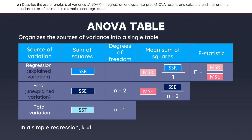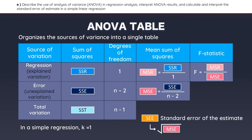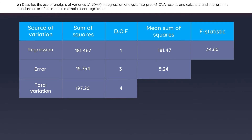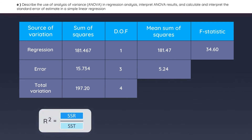There is one last formula you should know for this reading. The standard error of the estimate is simply equal to the square root of the mean square error. The lower the standard error, the better the model. So the next time you see an ANOVA table, you should know what each of its values represent. For example, looking at this ANOVA table, to calculate the R-squared, you would use these two values to get 92%.